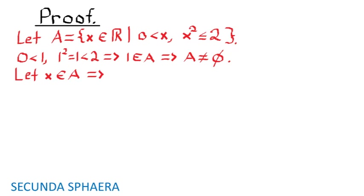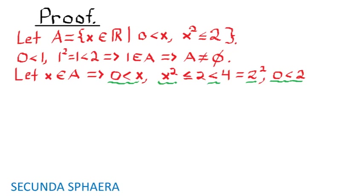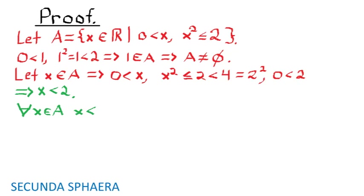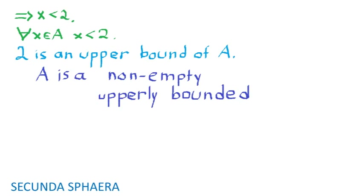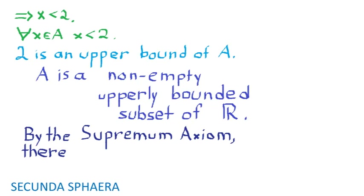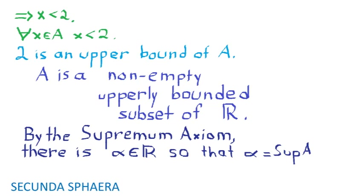Let x be in A, so x squared is less than 2, which is less than 4, which equals 2 squared. Since 2 and x are greater than 0, it follows that x is less than 2. This implies that for all x in A, x is less than 2, so 2 is an upper bound of A. It has been established that A is a non-empty, bounded above subset of the real numbers. By the supremum axiom, there exists a real number, let it be alpha, such that alpha is the supremum of A.